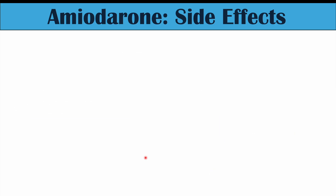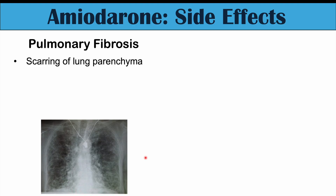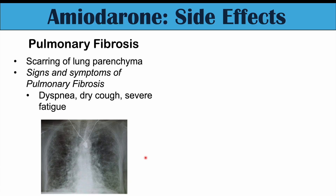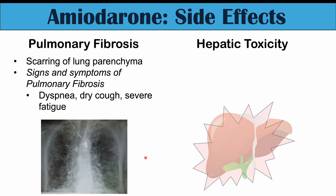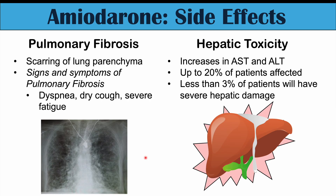Some other important side effects more specifically linked to amiodarone include pulmonary fibrosis — essentially a scarring of the lung parenchyma, the functional tissue of the lung. Signs and symptoms include dyspnea, dry cough, severe fatigue, and others. We can also see hepatic toxicity, with common increases in AST and ALT levels. Up to 20% of patients may be affected, though less than 3% will have severe hepatic damage such as cirrhosis.